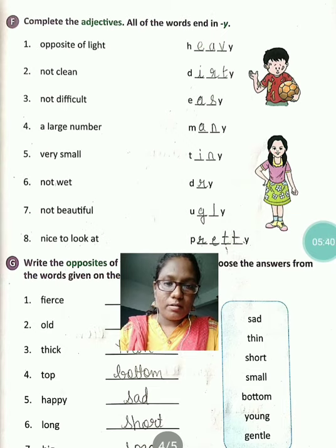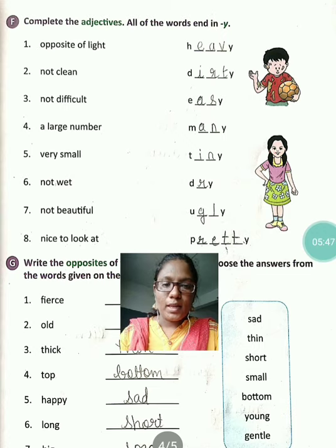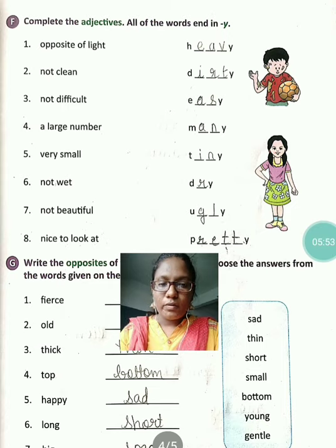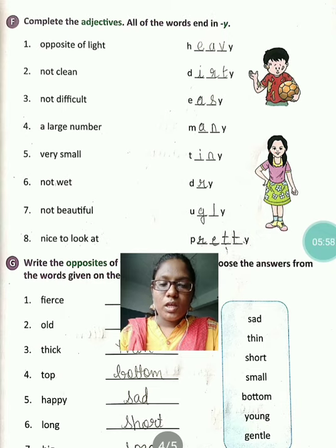Large number — yaani ki many. M-A-N-Y, many. Very small — yaani ki tiny. T-I-N-Y, tiny. Not wet — yaani ki dry. D-R-Y, dry.